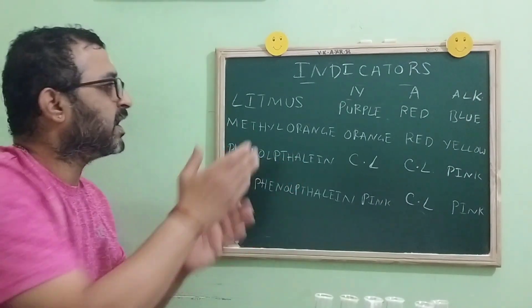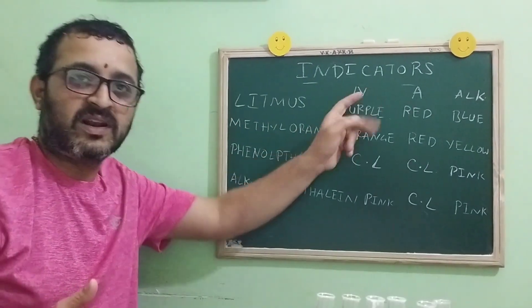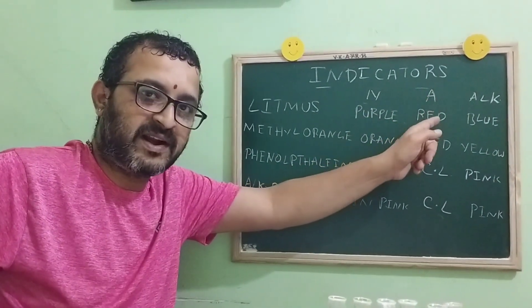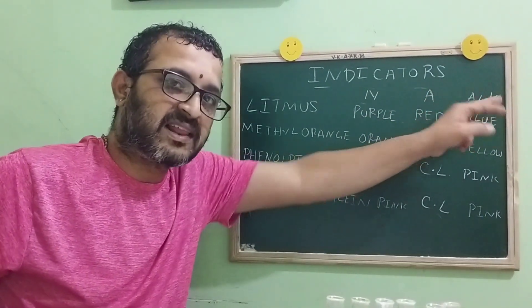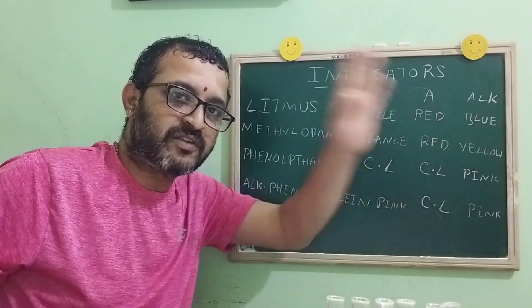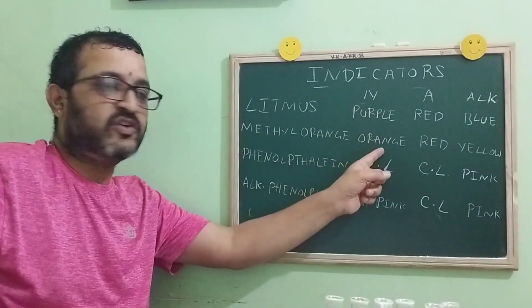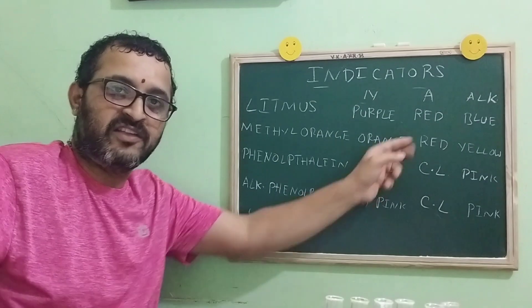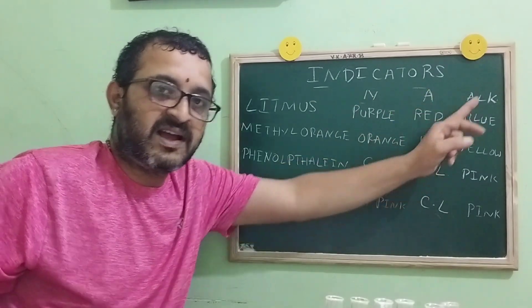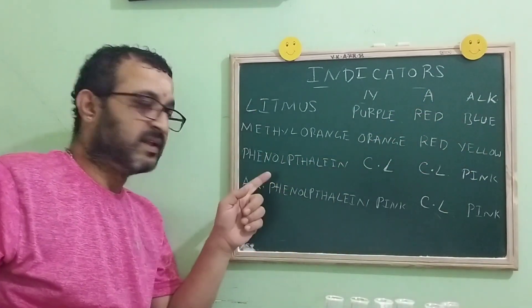For example, take litmus. In neutral, it is purple. In acid medium, it is red. And in alkaline medium, it produces blue color. Methyl orange: in neutral, it is orange. In acid medium, it is red. In alkaline medium, it is yellow.